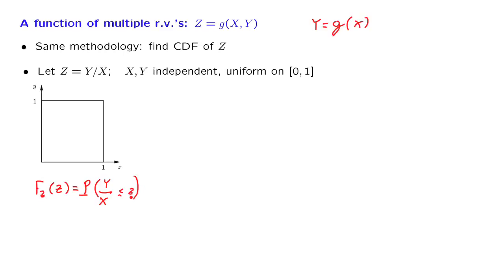Let us consider a few different cases. Suppose that z is negative. What is the probability that this ratio is negative? Well, since x and y are non-negative numbers, there's no way that the ratio is going to be negative. So if z, little z, is a negative number, the probability of this event is going to be equal to 0. This is the easier case.